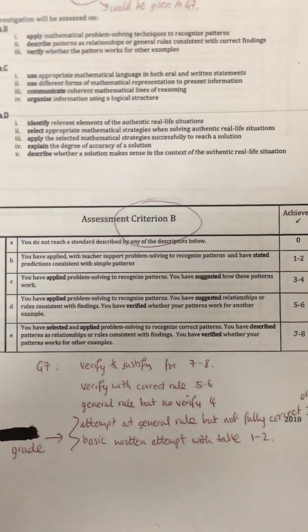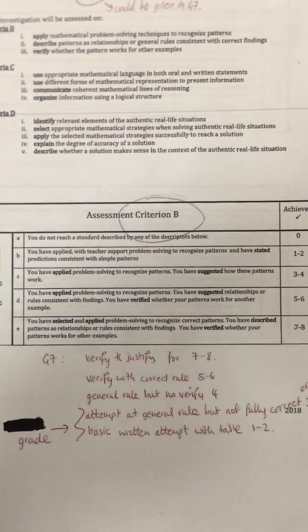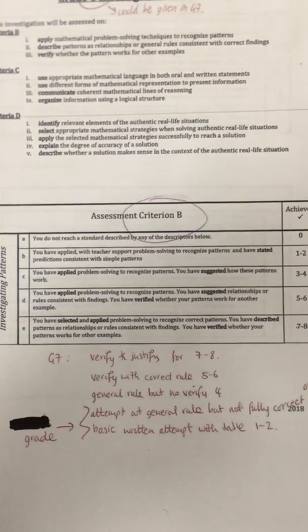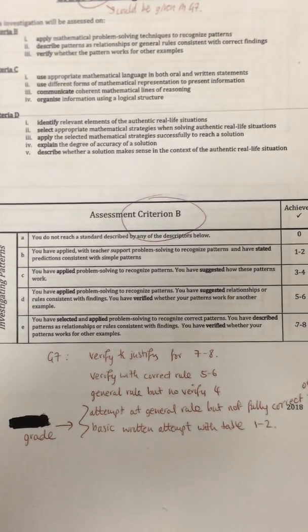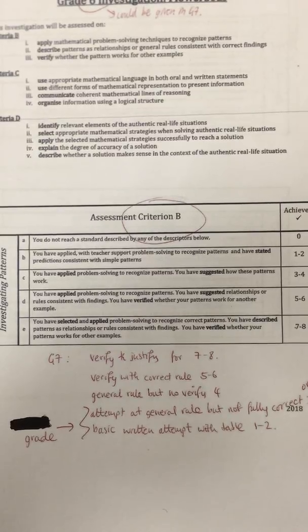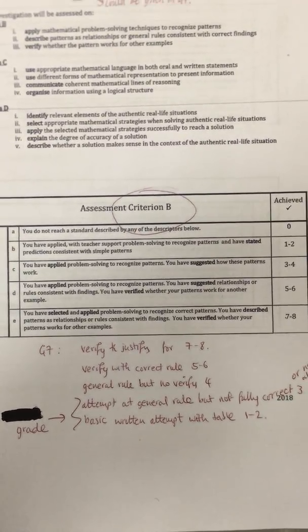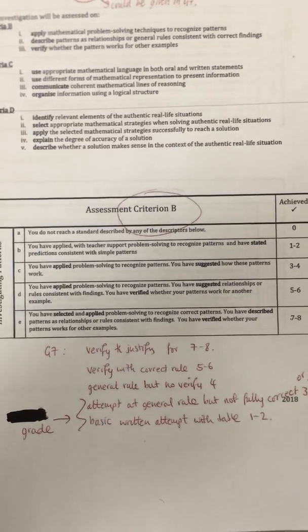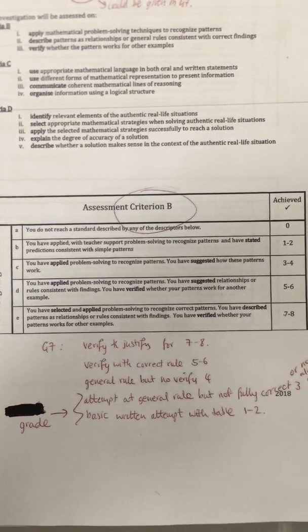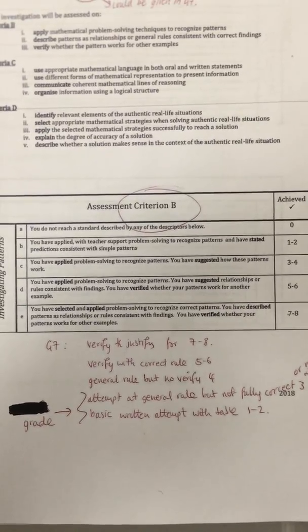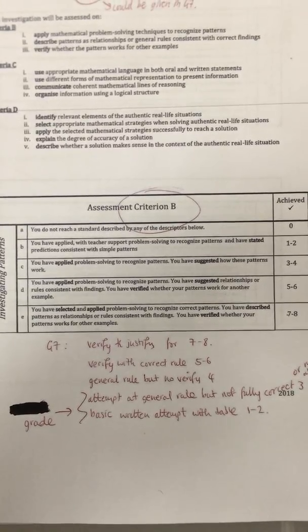Students must verify whether their patterns work for another example. Basically, the student has understood the problem, generated a table or graph, pictured a pattern related to the numbers or graph, and come up with a general rule — either in worded form or algebra form, which is best. From that general rule, they verify using a verify table to back up the rule and prove it works for other examples.